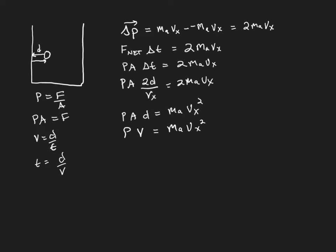So we're going to do what's called a root mean square, and the name tells you exactly what it is. We first square all the numbers, which gets rid of the annoying negative signs that make everything zero. Then we take the average or the mean. Then we take the square root again to get back to just velocity. Concretely, we take v_x1² + v_x2² and so on for every particle, divide by the number of particles, and that gives us v_x_rms². I'm not taking the square root here because it's already squared where I'll plug it in.